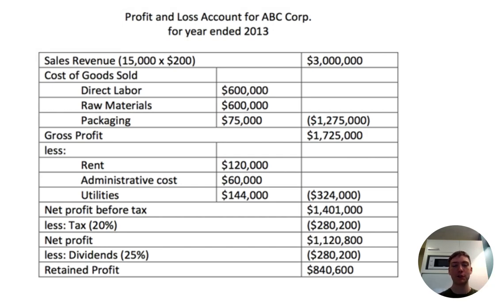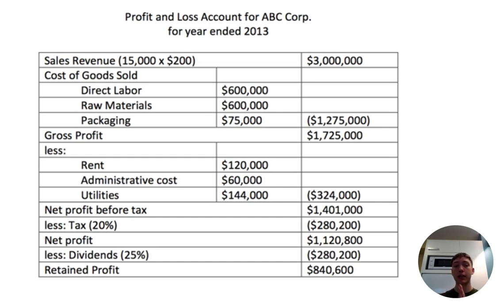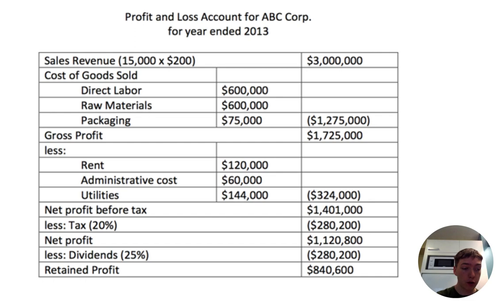Welcome back to another video. Today we're talking about chapter 3.4 in IB Business Management — this is where things start to get complicated. We're covering profit and loss accounts and balance sheets. I have a screen capture so I can give you a more visual example, because I think that's the easiest way to understand it. This chapter is called final accounts.